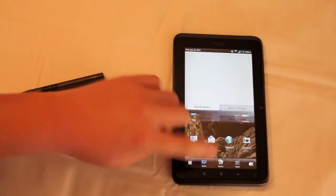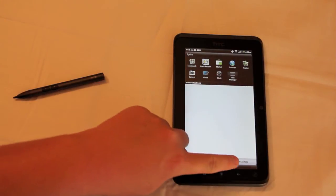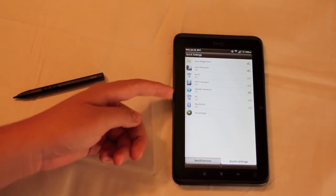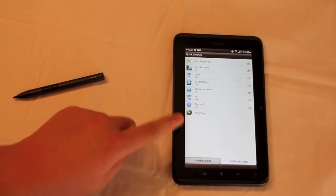The drop-down quick menu up here has your recently used apps, your notifications, as well as your quick settings, which allows you to access your commonly used settings for most people, such as brightness, rotation, wifi, 4G, hotspot, stuff like that, as well as all settings.